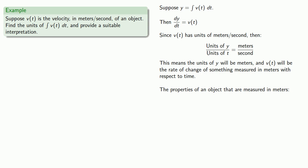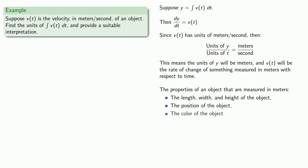So there are many things we could measure in meters — for example, the length, width, and height of the object, or the position of the object. The color of the object? No. The weight? No. The age? No.